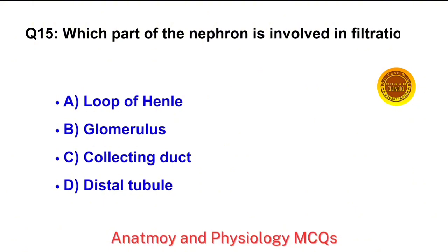Question No. 15. Which part of the nephron is involved in filtration? The right answer is option B: Glomerulus is involved in filtration.